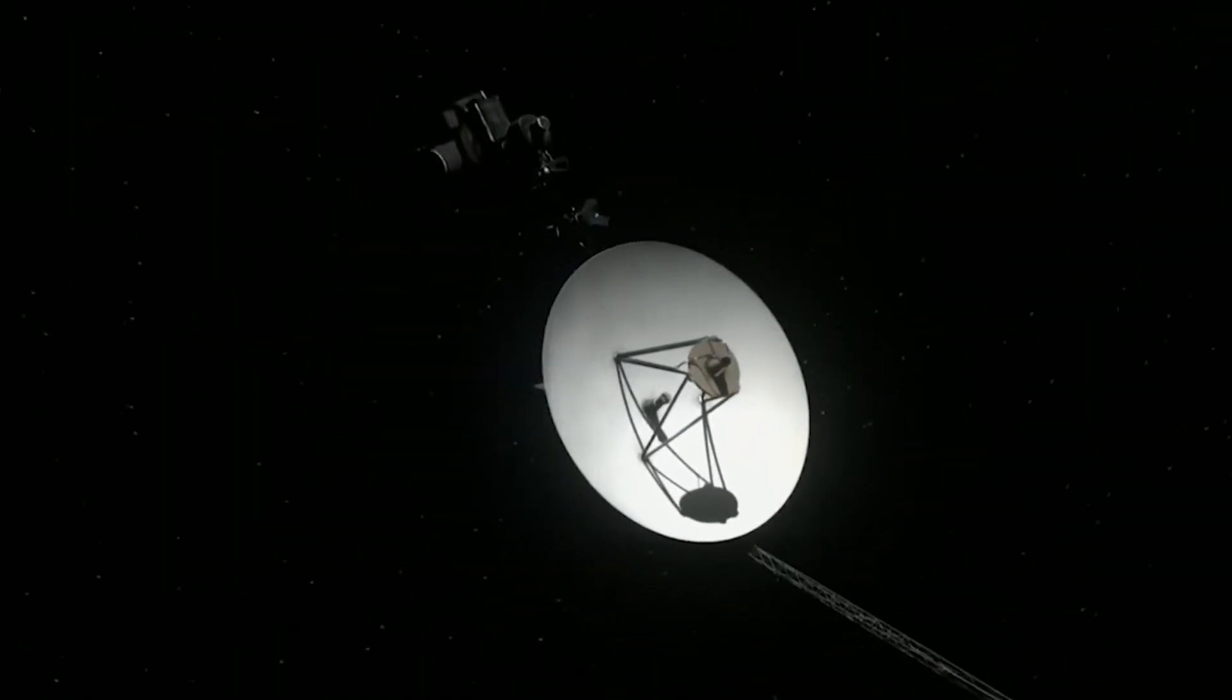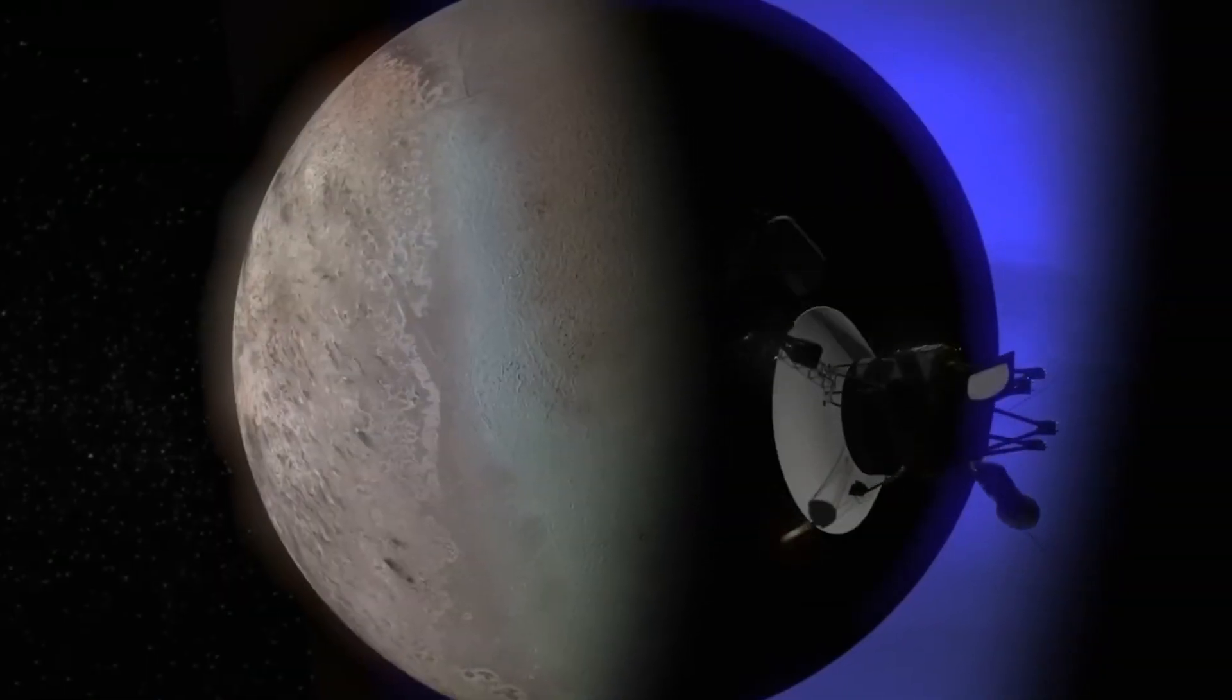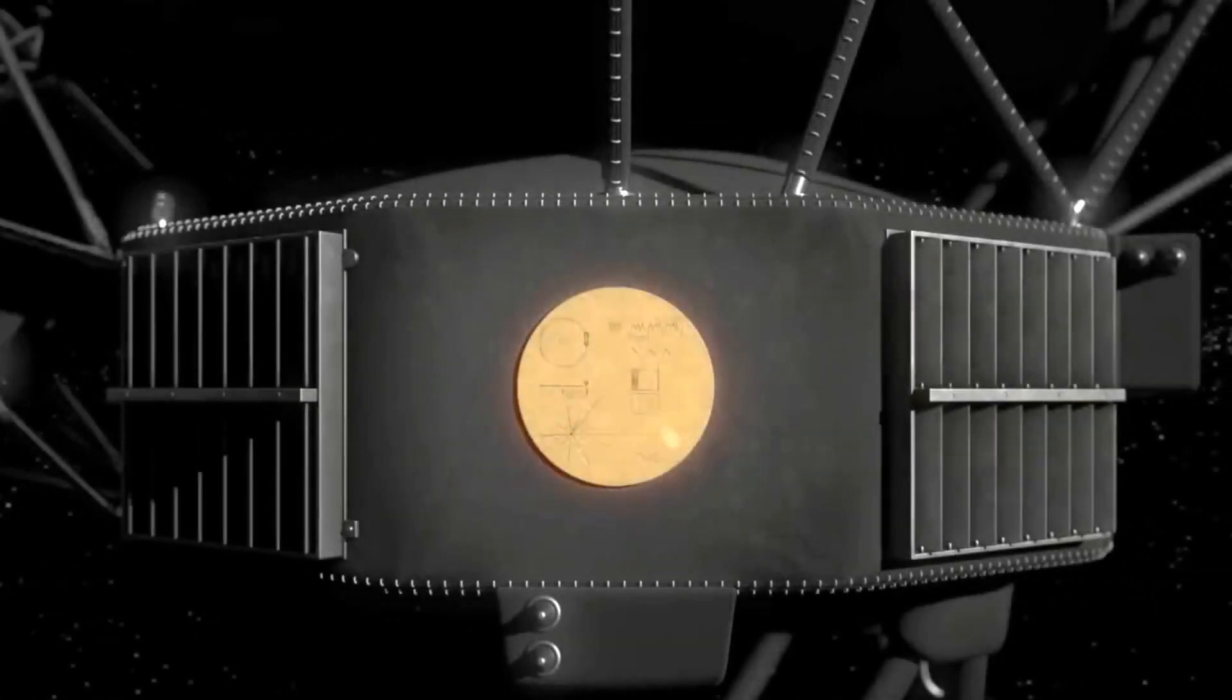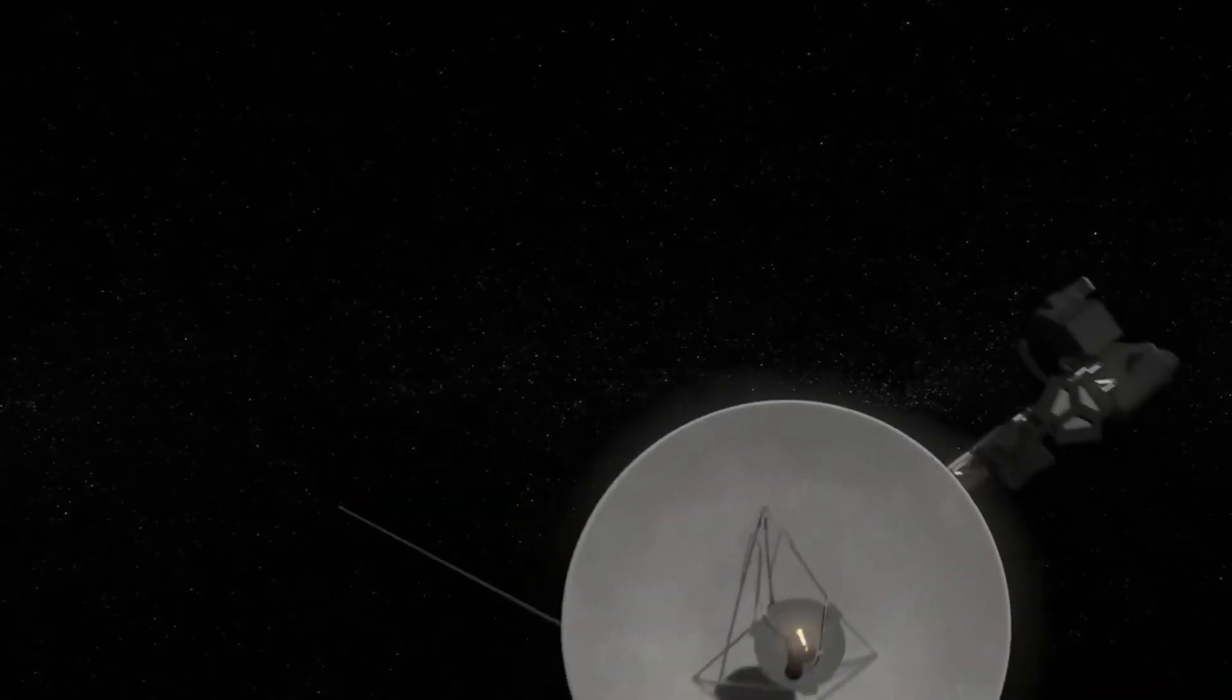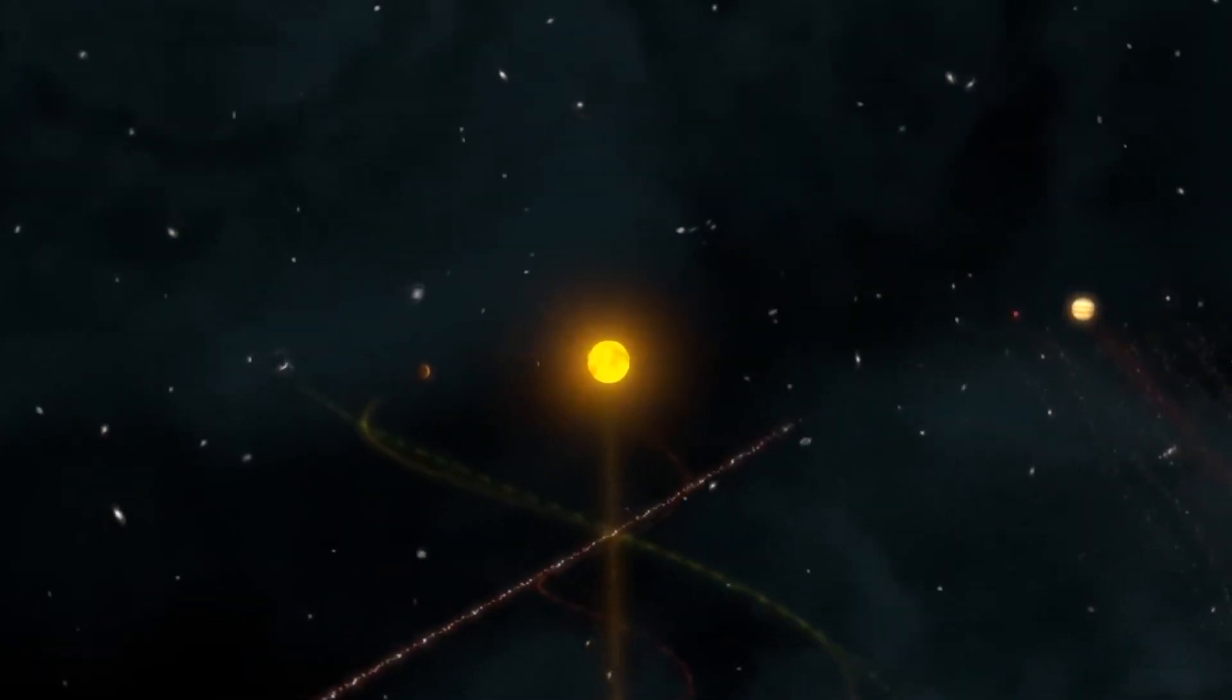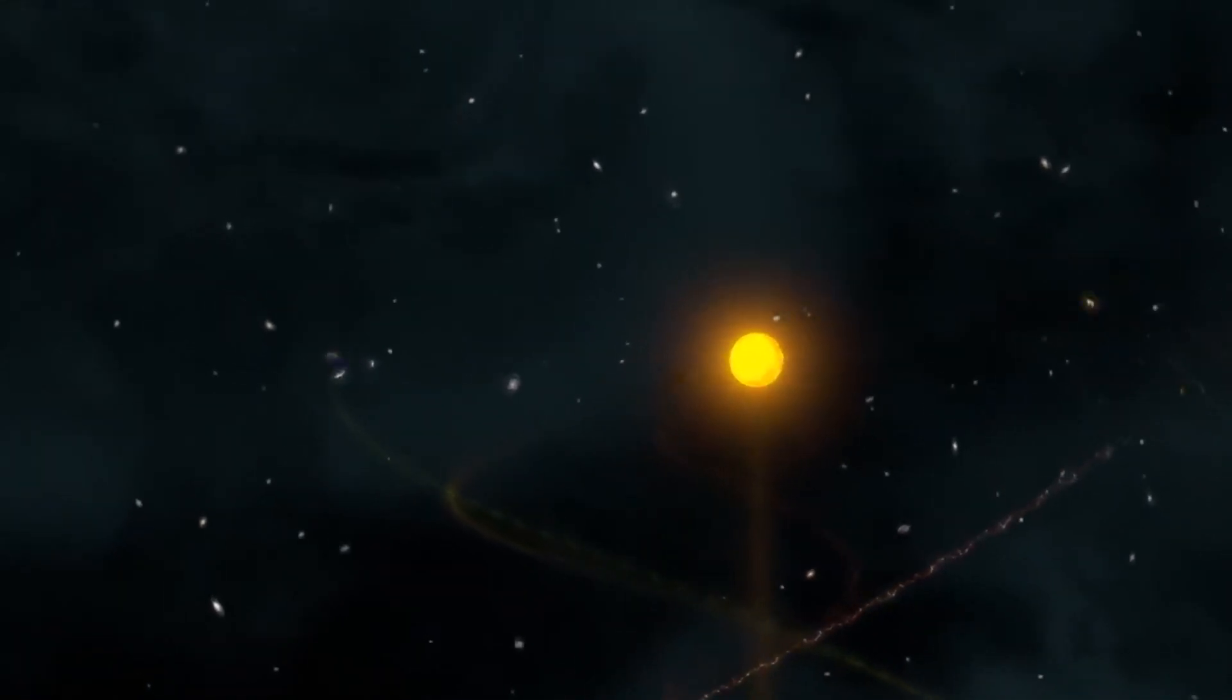One of the most fascinating aspects of the Voyager mission has been the discoveries they have made that were not initially part of their mission. For example, Voyager 1 made a groundbreaking discovery in 2012 when it detected a sudden drop in the number of charged particles that were coming from the Sun. The decrease in these particles signaled that Voyager 1 had crossed the heliopause and had entered interstellar space.